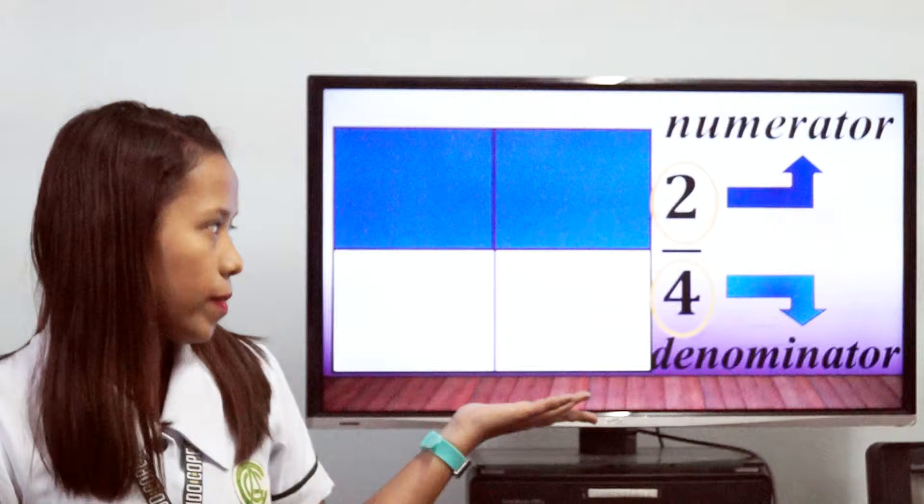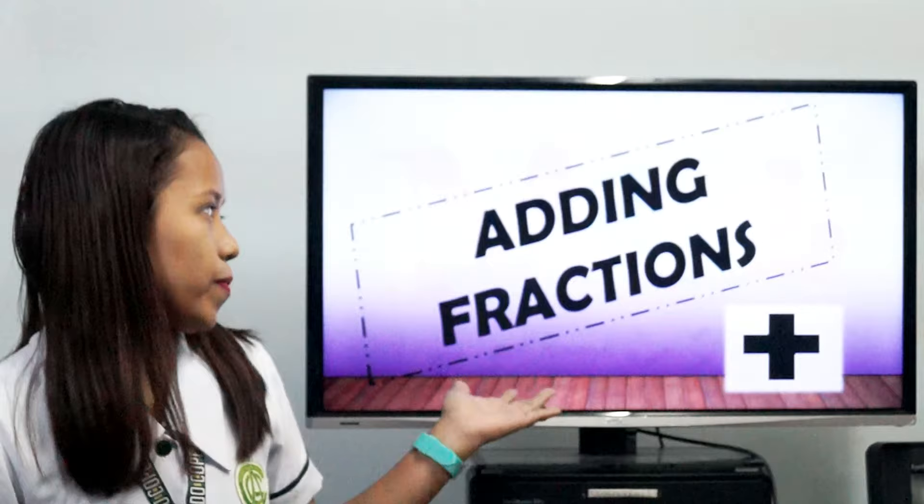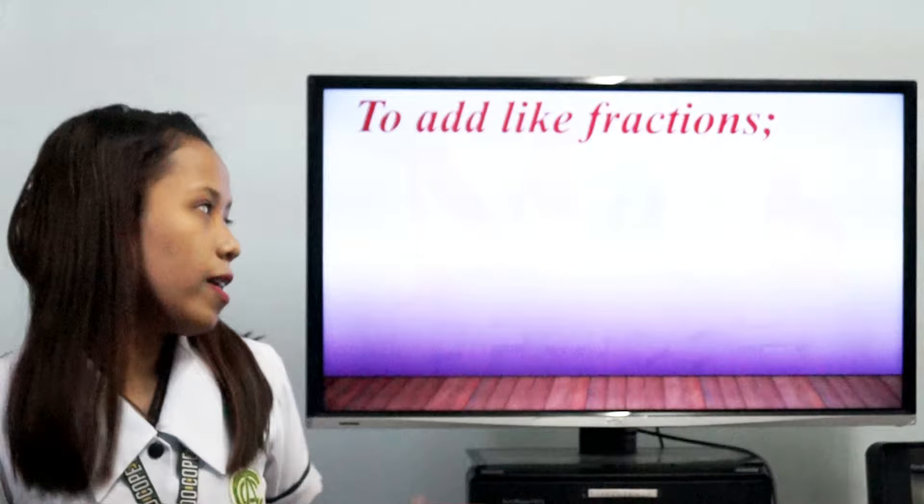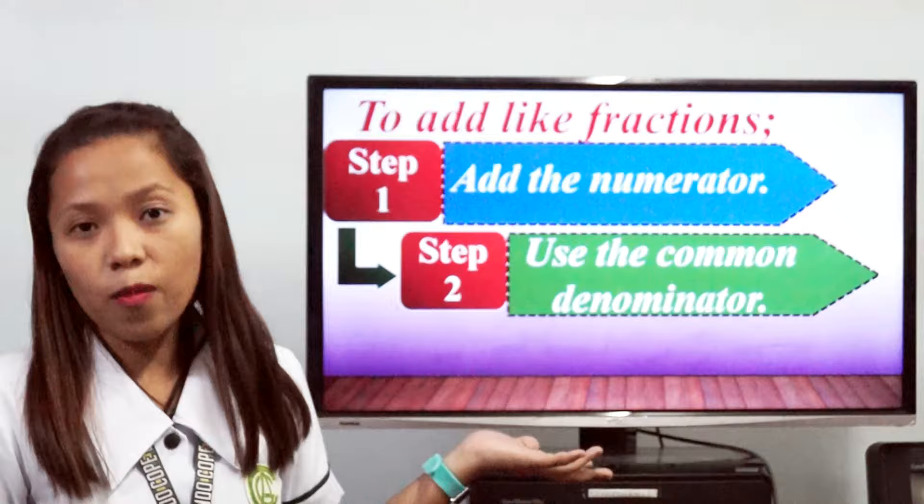Now let's proceed in adding fractions with the same denominator. To add like fractions, you must remember these three steps. Step 1: add the numerators. Step 2: use the common denominator. And step 3: write the sum below the line.